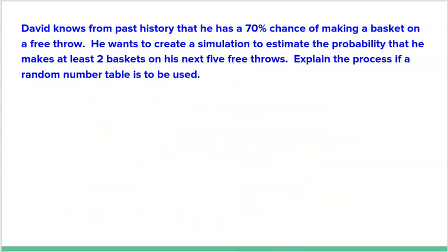Last example: David knows from past history that he has a 70% chance of making a basket on a free throw. He wants to create a simulation to estimate the probability that he can make at least two baskets on his next five free throws. At least two means two or more — so if he makes two, three, four, or five, he'll be happy.